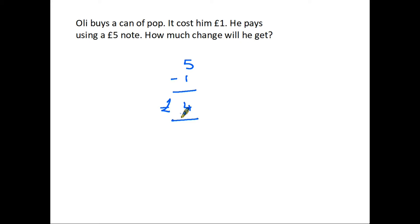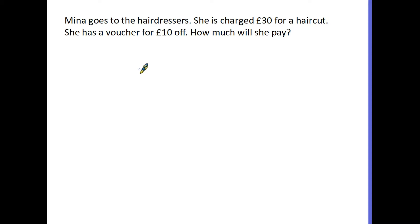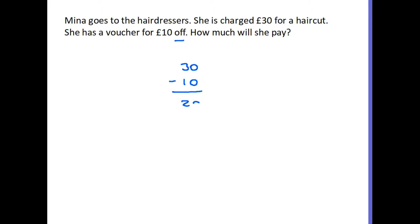The final example: Mina goes to the hairdressers. She is charged £30 for a haircut, but she has a voucher for £10 off. How much will she pay? There's maybe a little clue in the word 'off', because to answer this we have to take £10 off £30 — again a subtraction. £30 minus £10 means Mina is going to pay £20. So four examples, all with relatively easy mathematics, but none of which tell us which sum we actually need to do.